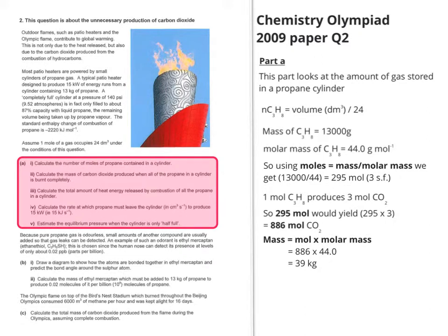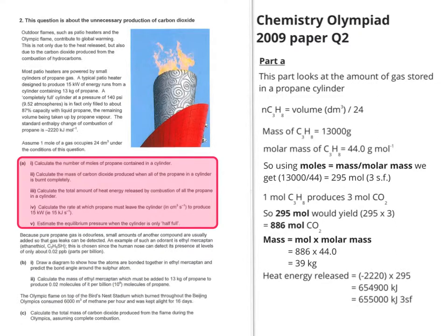The next thing it wants us to work out is the total amount of heat energy released by combustion of all the propane. The introductory data tells us that the standard enthalpy change of combustion of propane is minus 2220 kilojoules per mole. So we end up with 655,000 kilojoules for 295 moles of propane being completely burnt.